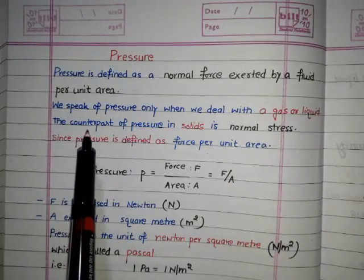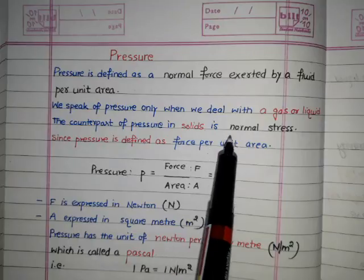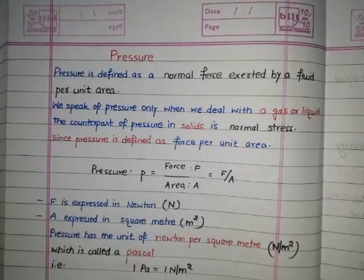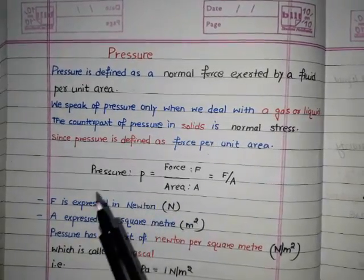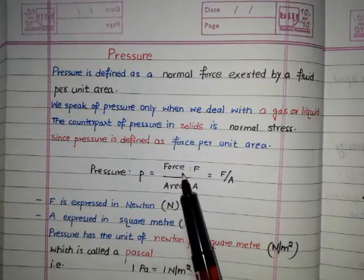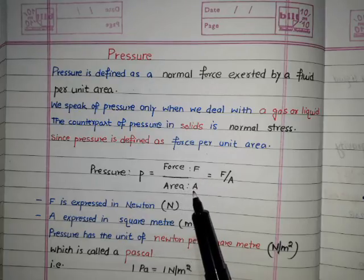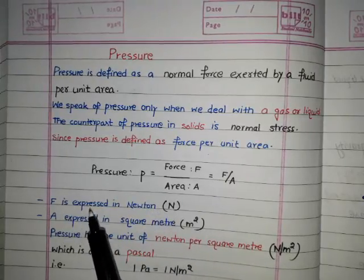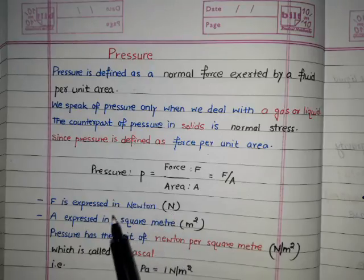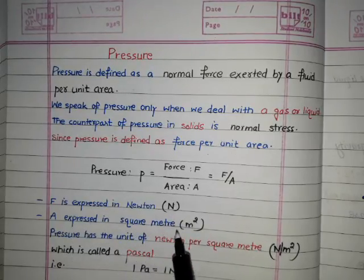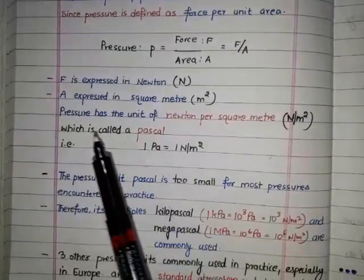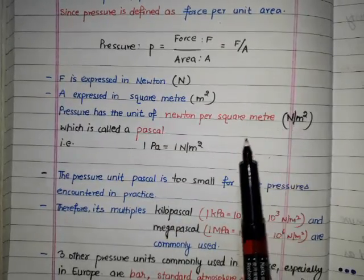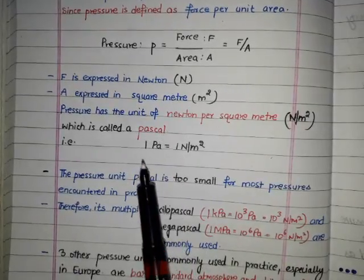We speak of pressure only when we deal with a gas or liquid, and the counterpart of pressure in solids is normal stress. Since pressure is defined as force per unit area, it is denoted by small p, equal to F upon A, where F is expressed in Newtons and A is expressed in square meters. The unit of pressure is Newton per square meter, which is called Pascal.